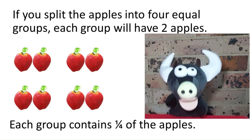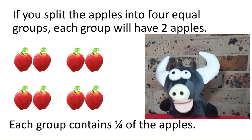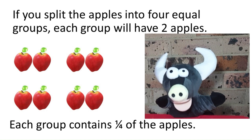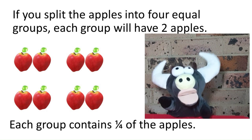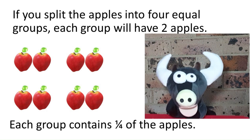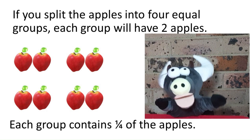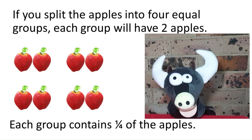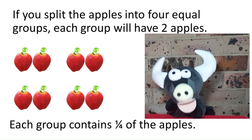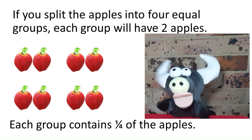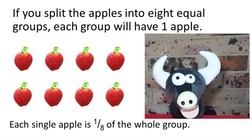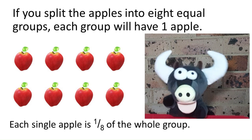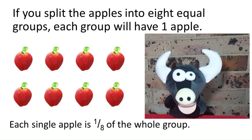Each of these smaller groups is called a quarter of the apples. Four quarters still adds up to eight apples. If you split the apples into eight equal groups, each group will have one apple.